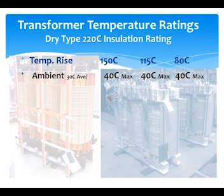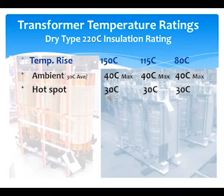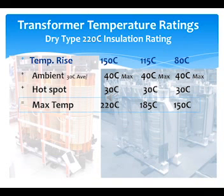Next we add the ambient, which is based on 30C average — 86F — over a 24-hour period, and 40C max — 104F — during that same period. Hot spot is a theoretical hot point inside the transformer, which is 30 degrees C added in. When we add these values together, we get the maximum temperature the transformer should ever see.